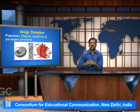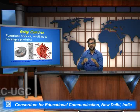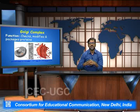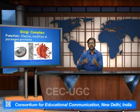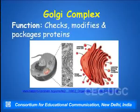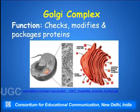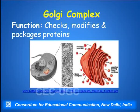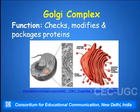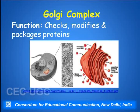The next important organelle present within the cell is called the Golgi complexes. The Golgi complexes plays a very important role — it checks, modifies, and packages the proteins within the cell. There are two major phases of the Golgi complexes, one is called the cis phase and the other is called the trans phase.